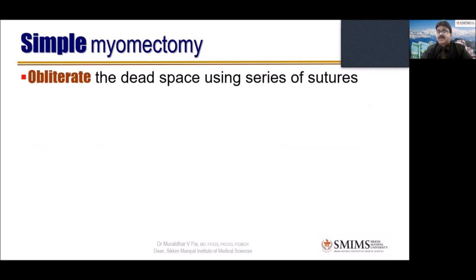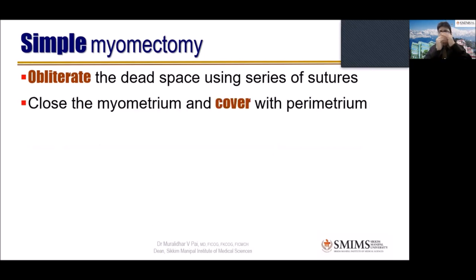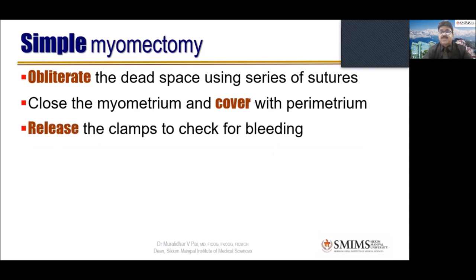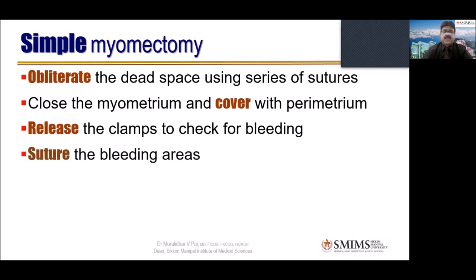Obliterating the dead space using a series of sutures is very, very important. Start from the base, put multiple layers — first here, then here, then here — to obliterate the dead space. Every time, squeeze to check whether there is any bleeding. Close the myometrium and cover with peritoneum. Release the clamp to check for bleeding — you are releasing every 20 minutes during suturing, but towards the end, release the clamp and gently squeeze the uterus to check. If you still find bleeding, put figure-of-eight or transfer sutures. Then close the abdomen in layers.